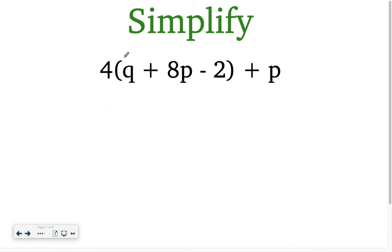Simplify. This is, again, like what we did yesterday combined with what we did today. A little different, though, because I have 3 terms inside the parentheses. It works the same way. I'm going to distribute that 4 to everything inside of my parentheses. So 4 times q is going to give me 4q plus 4 times 8p would be 32p. And then 4 times a negative 2 would be minus 8 plus p.